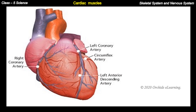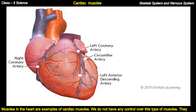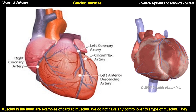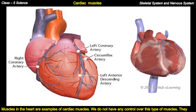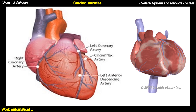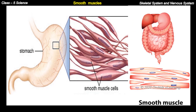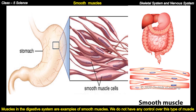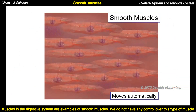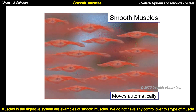Cardiac muscles: muscles in the heart are examples of cardiac muscles. We do not have any control over this type of muscle. Smooth muscles: muscles in the digestive system are examples of smooth muscles. We do not have any control over smooth muscles either.